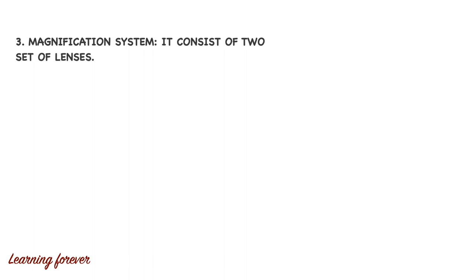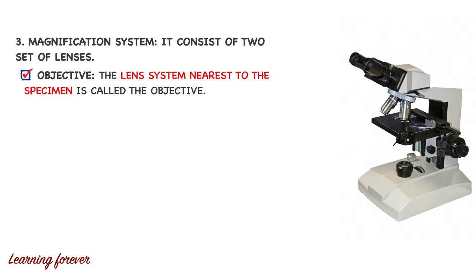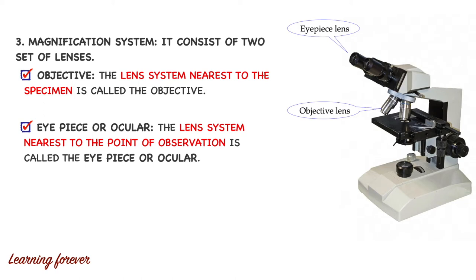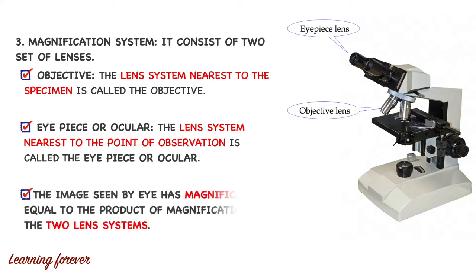Third is the magnification system, which consists of two sets of lenses. The first is the objective lens — the lens system near to the specimen is called the objective lens. The second is the eyepiece or ocular — the lens system near to the point of observation. Since we are using two lenses, the total magnification seen by the eye equals the product of the magnifications of both lens systems. For example, if the eyepiece lens is 10x and the objective lens is 40x, total magnification will be 10 × 40 = 400x.